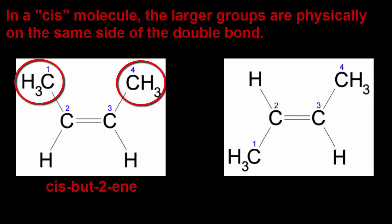The one on the left is called cis-but-2-ene, and in a cis molecule the larger groups, so the CH3s, they're on the same side of the double bond, they're bigger than the hydrogens.